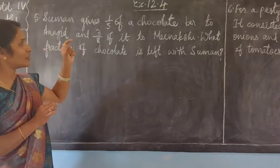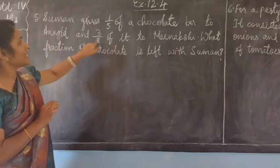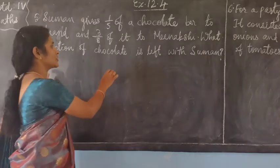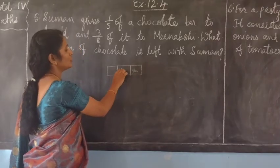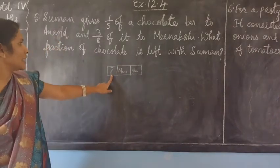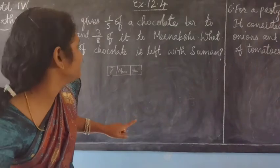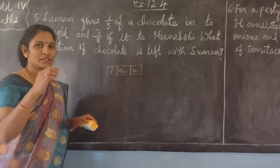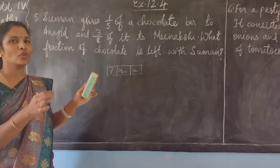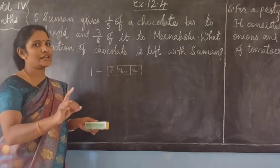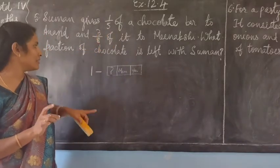From that one chocolate, he gave 1/5 to Anandam and 3/8 of the same chocolate he gave to Meenakshi. From the same chocolate, he gave one portion to Anand and one portion to Meenakshi. Now our question is: how much, or what fraction of the chocolate, is remaining with him? So we have to subtract the fraction of chocolate given to Anand and Meenakshi from the 1 chocolate he had with him.